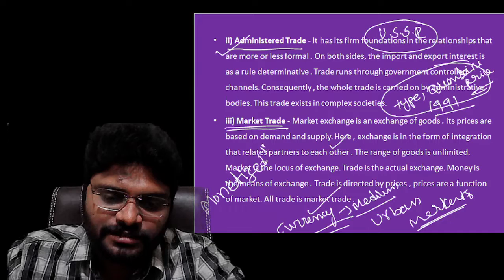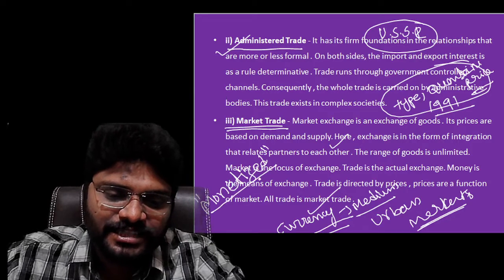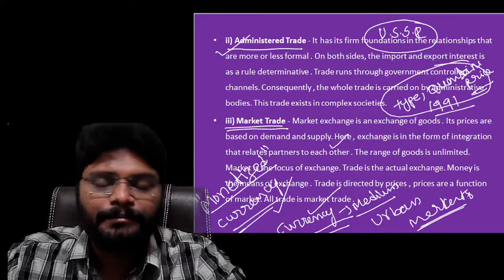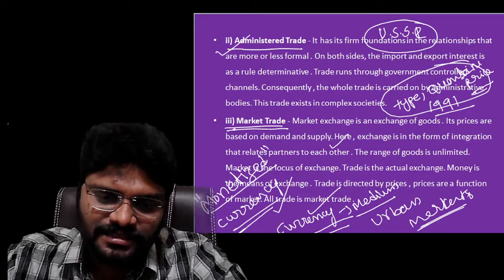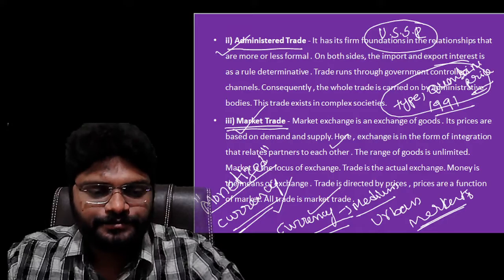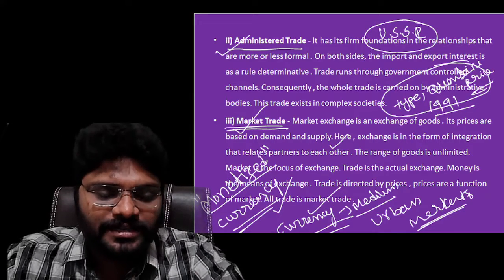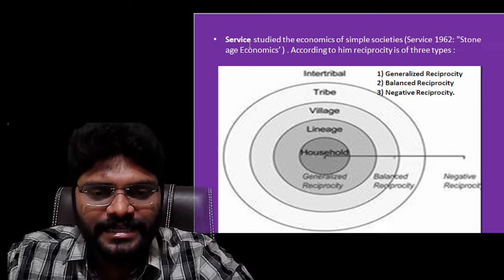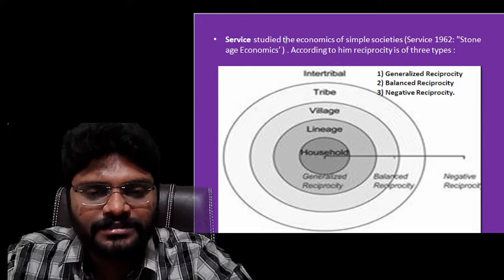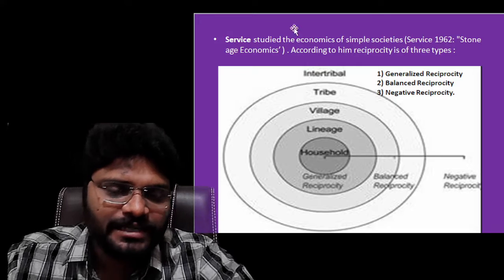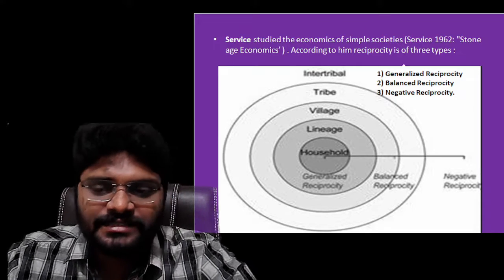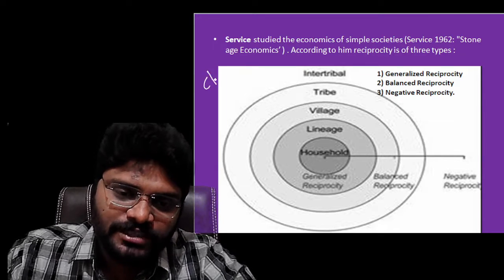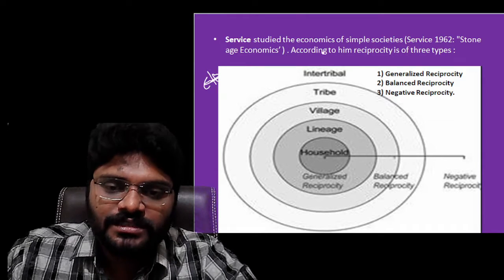In monetized societies, everything is calculated in units of currency — every transaction is done using money. That is called market trade. This completes Karl Polanyi's concept. However, Sahlins and Service made three subdivisions within the reciprocity given by Karl Polanyi. The basis for their subdivision is the closeness of relationship between the parties involved.